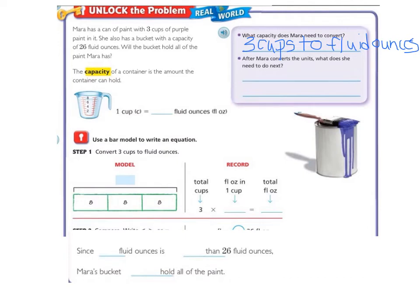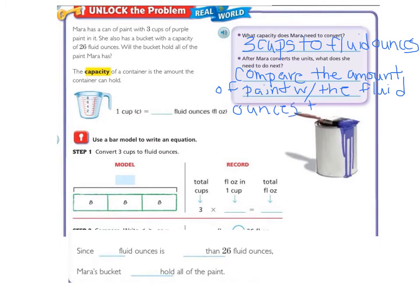The next bullet point says, after Mara converts the units, what does she need to do next? After Mara figures out how many fluid ounces are in 3 cups, she will need to compare the amount of paint with the bucket capacity. We know that the bucket will hold 26 fluid ounces.